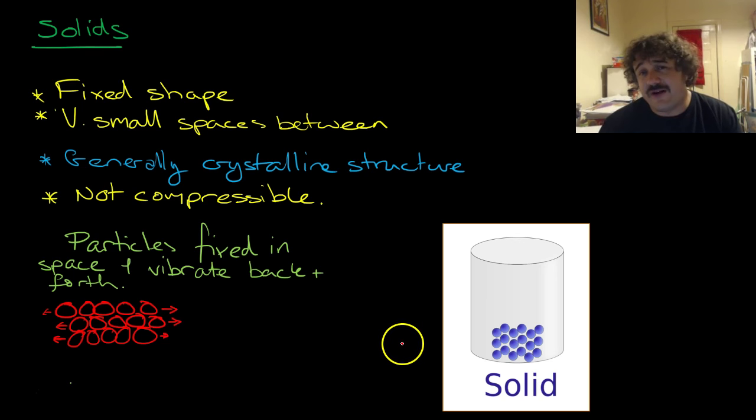Basically, there are several defining features for each state of matter. Solids have a fixed shape. There are very small spaces between the particles. They have generally a crystalline structure. Ones that don't have a crystalline structure we call amorphous. Morph means shape, and when we put A in front of it, that's a prefix that means not, does not have. They're not compressible, which means we can't squish them down physically.